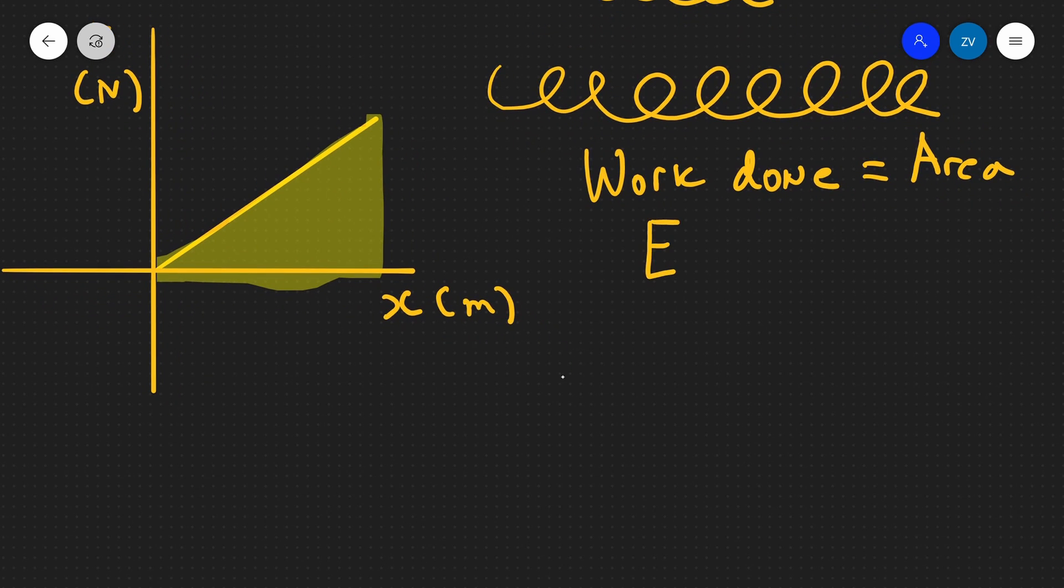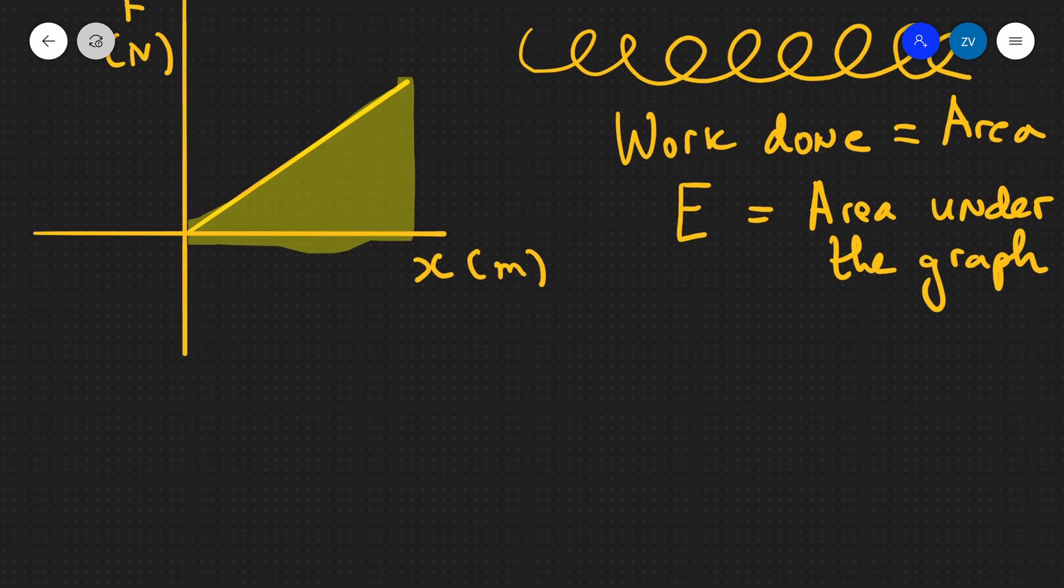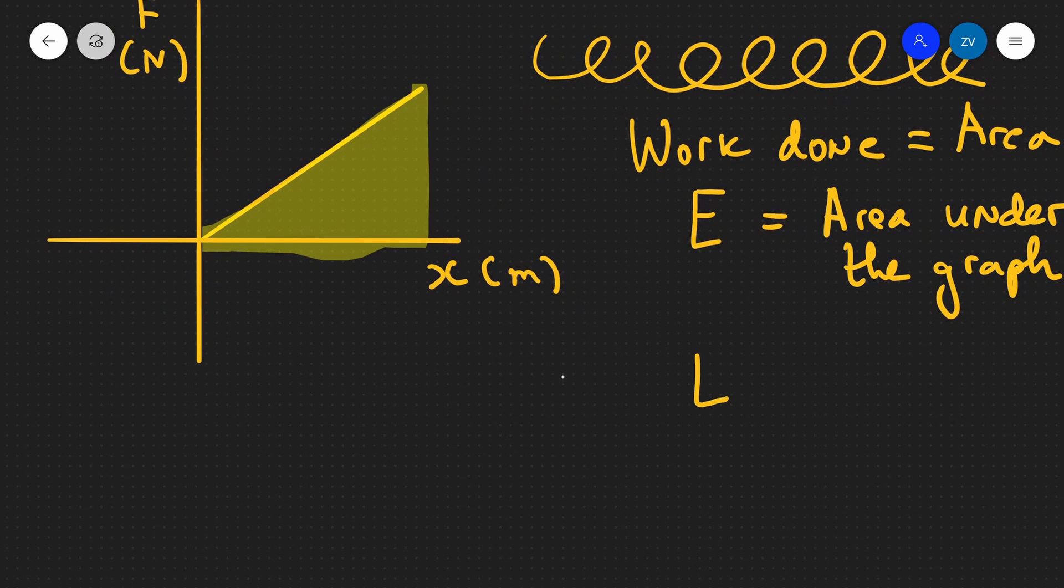We can say that the energy, which I'll call E, is equal to the area underneath the graph. Because this is a triangle—the force is directly proportional to the extension—the area is one-half times the base times the height, which equals one-half Fx, where F is the force applied and x is the extension.